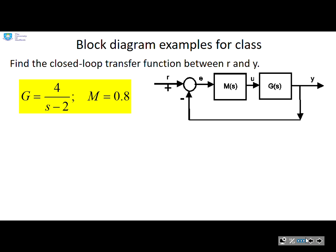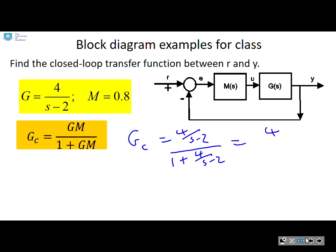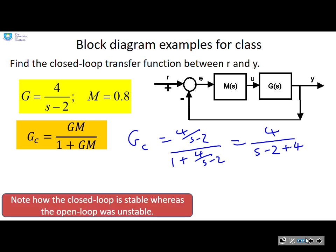Another example. Find the closed loop transfer function between r and y for this example here. So let's write it down. We're going to end up with gc equals 4 over s minus 2 over 1 plus 4 over s minus 2, which is going to be 4 over s minus 2 plus 4. And there's a very key observation here. You'll see that the open loop is unstable. Look, there's an s minus 2 factor, so the pole is in the right half plane.